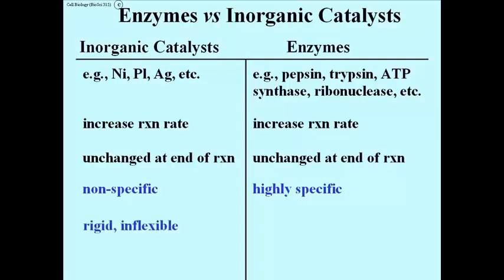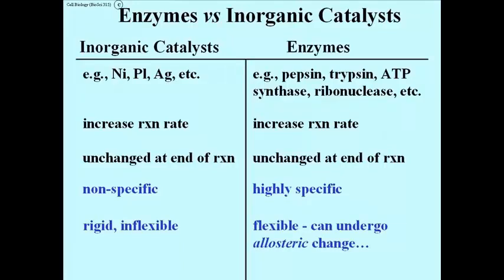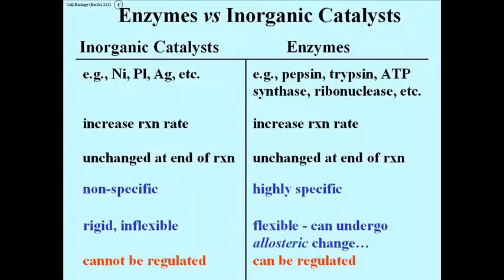Inorganic catalysts are rigid and inflexible, as you would expect from metals. Enzymes, however, as you would expect from any protein, are flexible and can undergo shape change or allosteric change — allosteric just means alternate shape. Inorganic catalysts cannot be regulated, largely because they are rigid and inflexible. Enzymes can be regulated, and this is due to the fact that enzymes can undergo allosteric change, that is, change in shape. We talk about the regulation of enzymes as, for the most part, allosteric regulation.